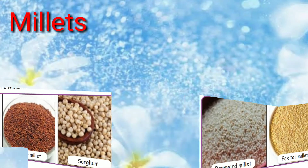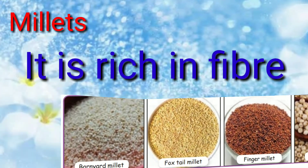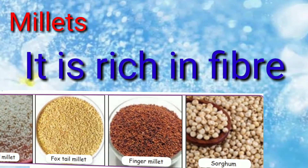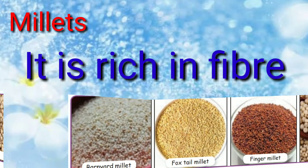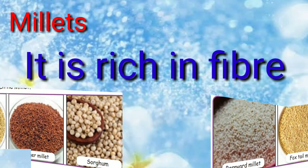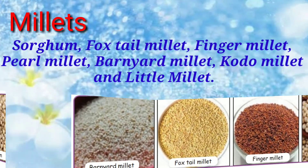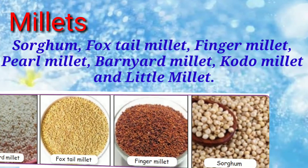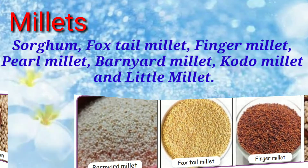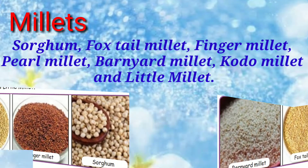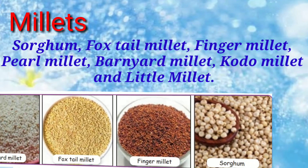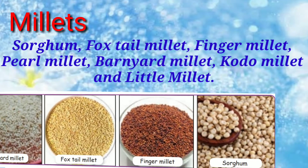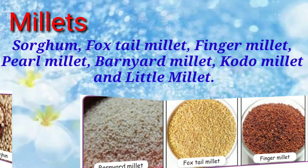Next is millets. Millets are a group of small seeded grasses. They help in weight loss because they contain more fiber. Some millet products are sorghum, foxtail millet, finger millet, pearl millet, barnyard millet, kodo millet, and little millet.